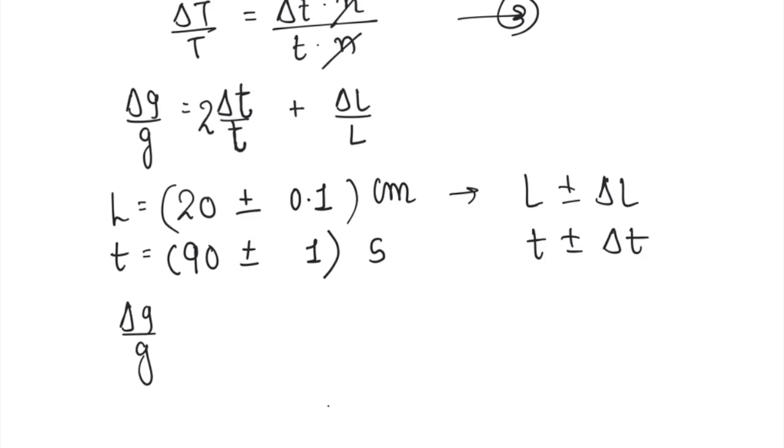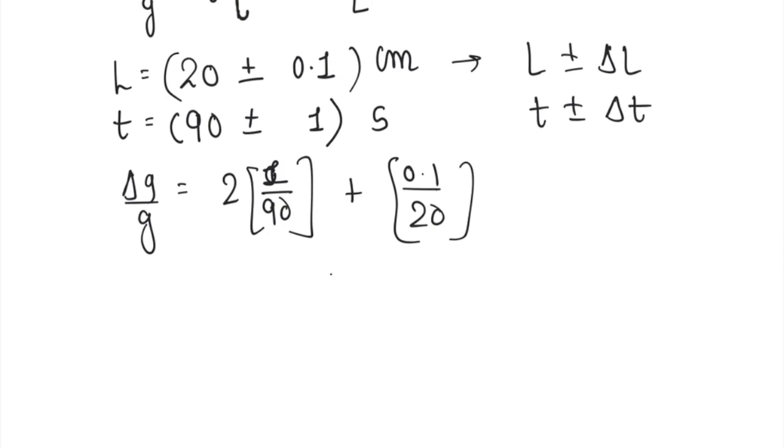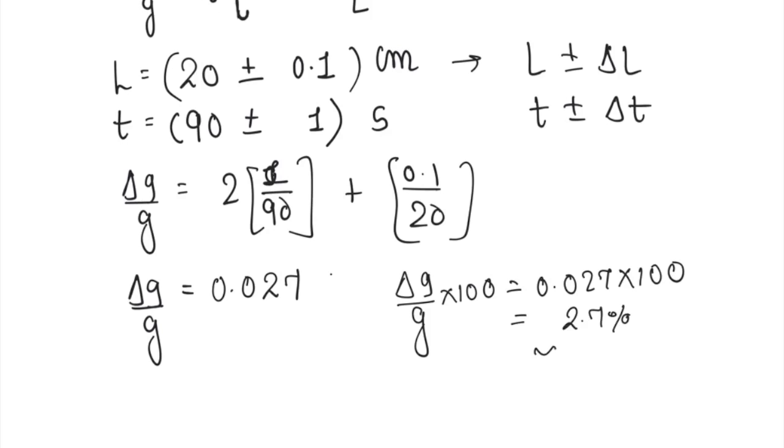Putting all the values, delta G by G equals 2 times 1 upon 90 (that is delta T by T) plus 0.1 upon 20 (which is delta L by L). Now substituting all the values, we will be getting delta G by G equals 0.027, which equals 2.7 percent or approximately 3 percent. This is your percentage error.